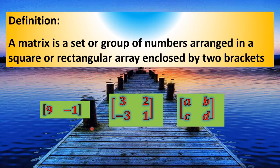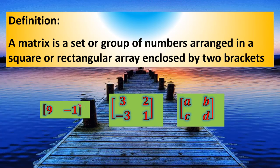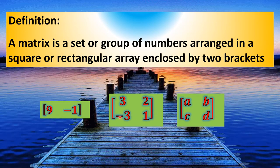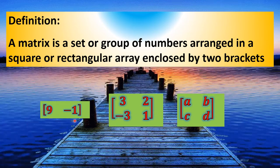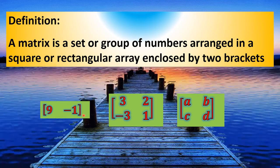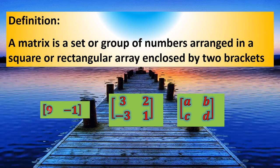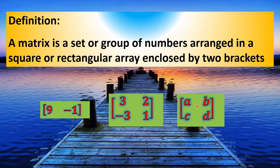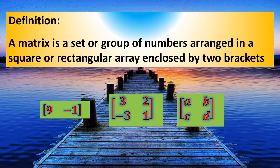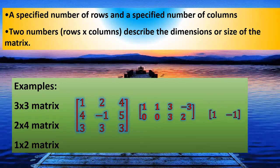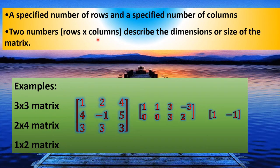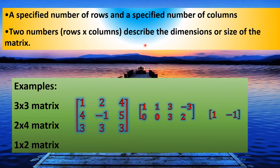A matrix is a set group of numbers arranged in rectangular brackets. It has any specific number of rows or columns. Some matrices have the same specified number of rows and columns.